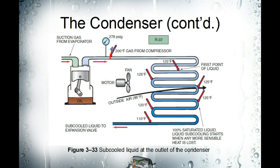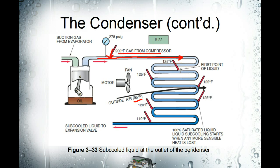At the outlet of the compressor, if you could measure it, you would read 200 degrees right on that refrigeration line. As refrigerant exits the compressor and enters the condensing coil of the condensing unit, it is in the state of high pressure, high temperature gas. What will happen is the fan motor blows 95 degree air across the hot vapor, and at a certain point in the condensing coil that high pressure high temperature gas will start to release its latent heat.